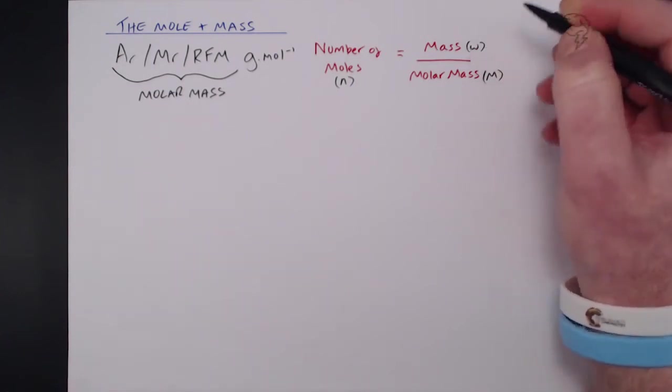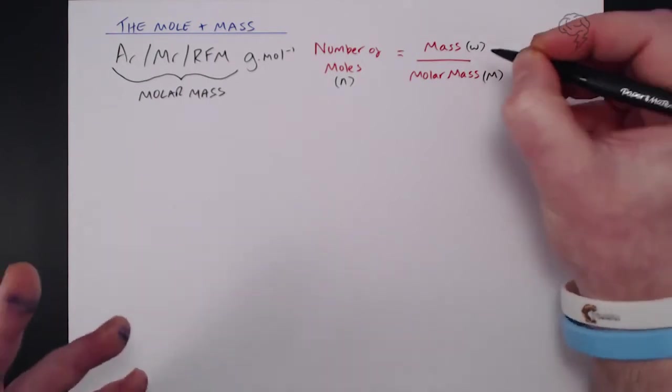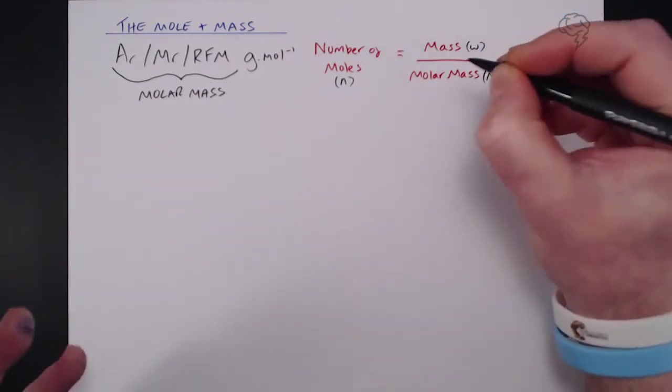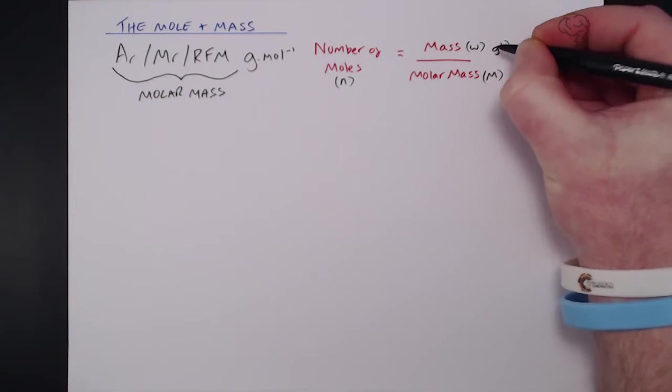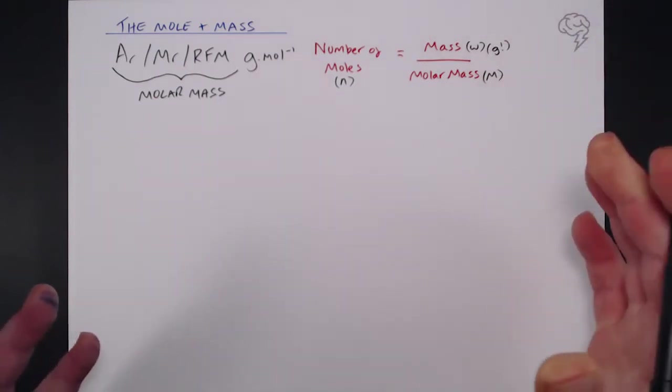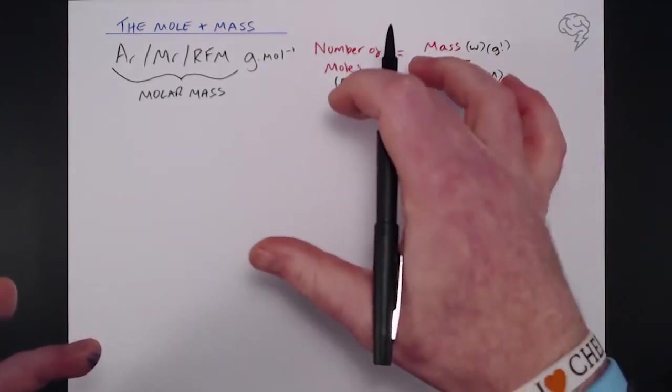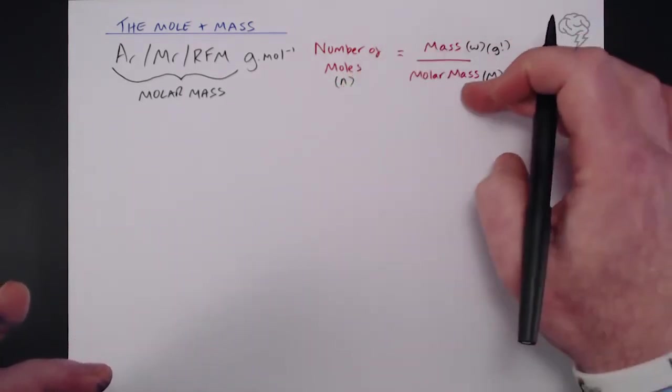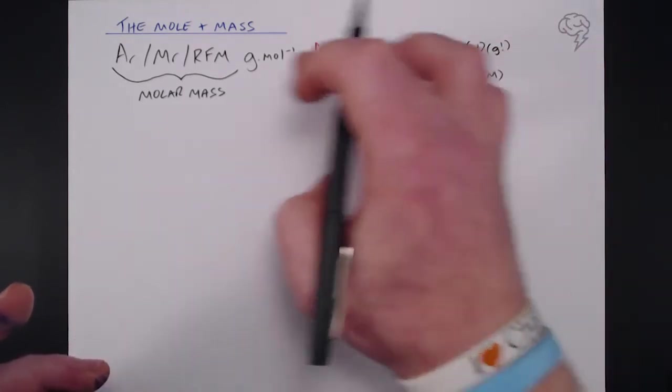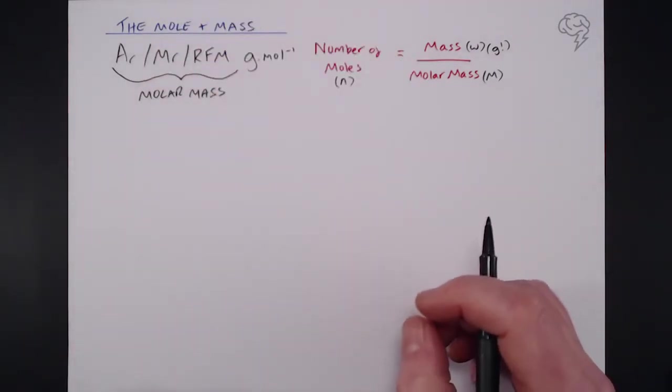Now what's also really important is that mass, if you're actually going to calculate the number of moles, the real number of moles, mass needs to be in grams. So if you're given it in kilograms you need to convert that. So this is our equation for the relationship between number of moles and mass using molar mass depending on what type of substance you have.